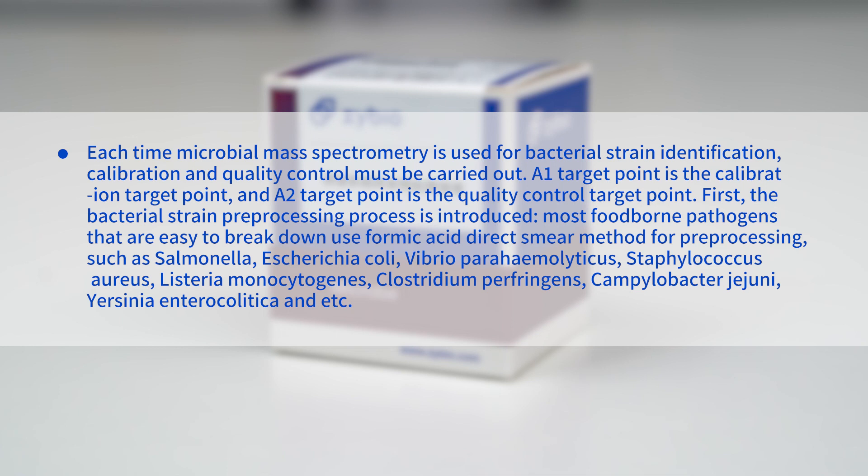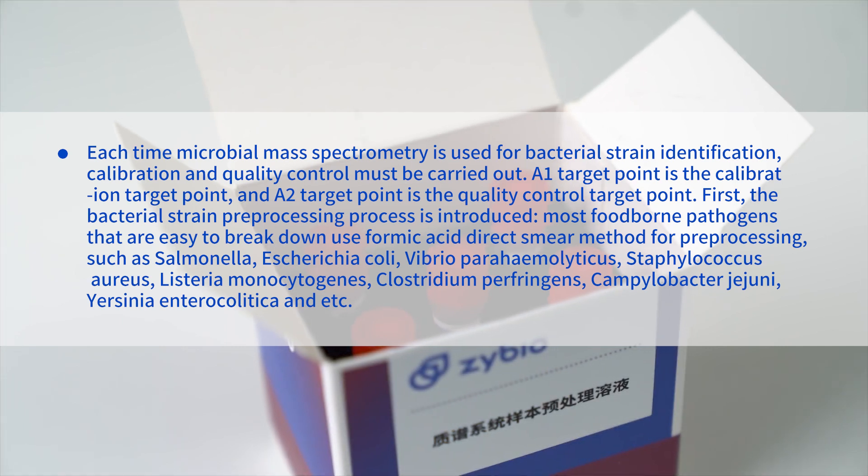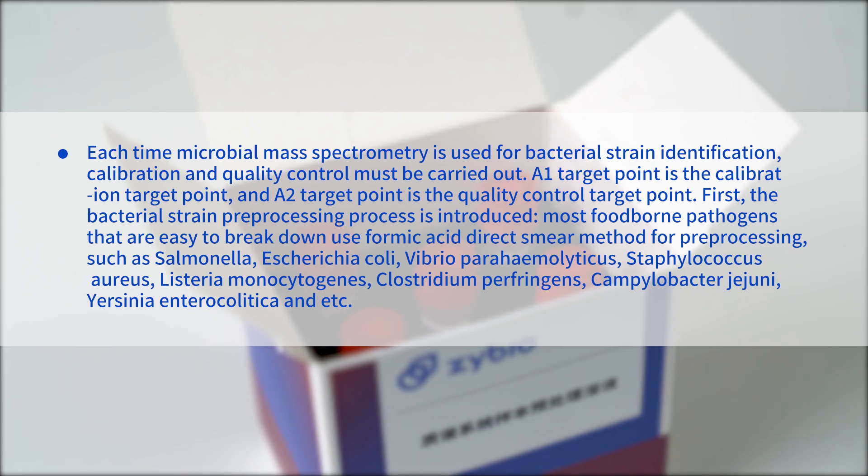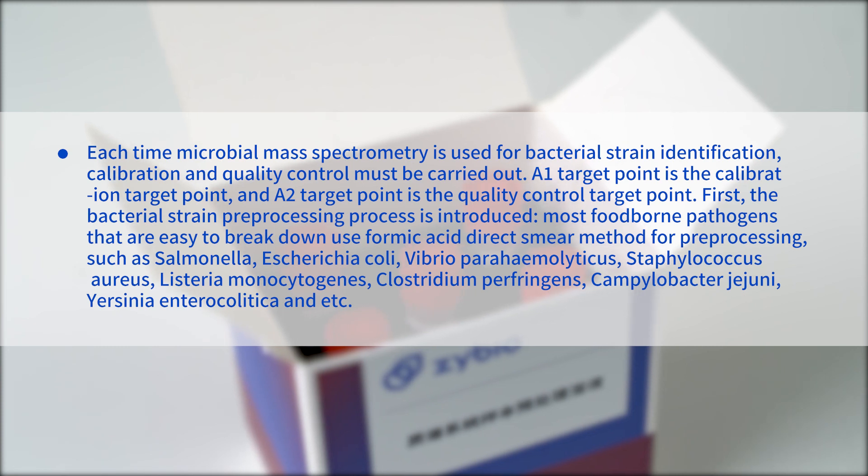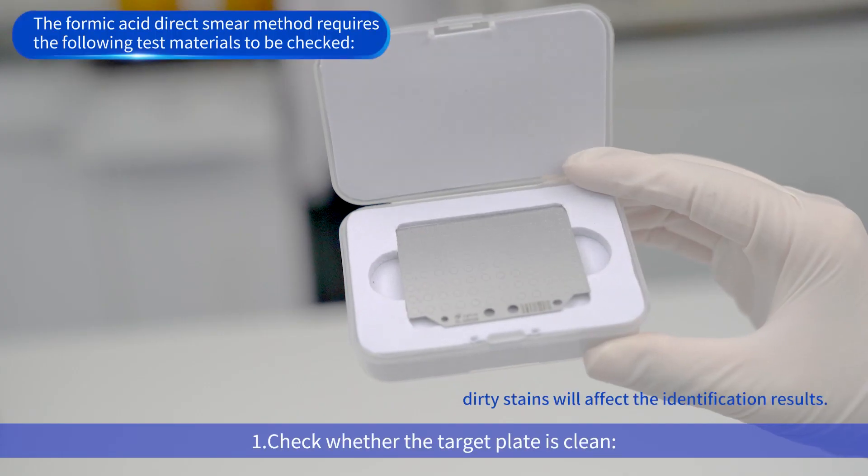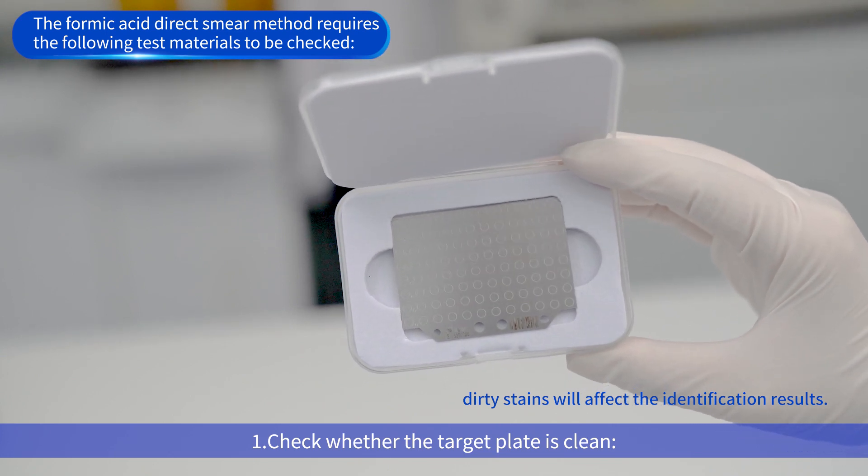First, the bacterial strain pre-processing process is introduced. Most foodborne pathogens that are easy to break down use formic acid direct smear method for pre-processing, such as Salmonella, Escherichia coli, Vibrio parahaemolyticus, Staphylococcus aureus, Listeria monocytogenes, Clostridium perfringens, Campylobacter jejuni, Yersinia enterocolitica, and others.